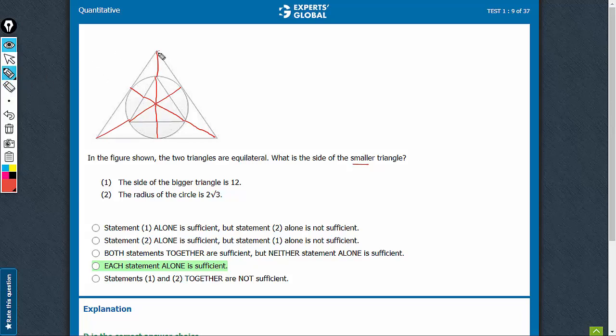And remember the property of a centroid. This is the case. For the bigger triangle, this says the bigger triangle is 12, side of the bigger triangle is 12. So this is turning out to be 12.